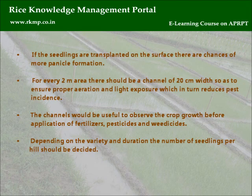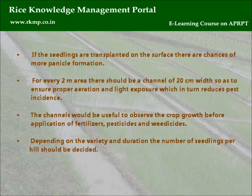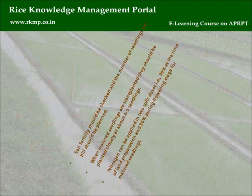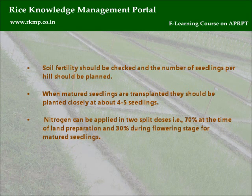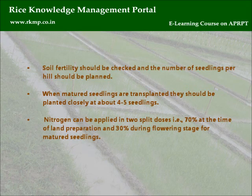For every 2 meter area, there should be a channel of 20 centimeters width to ensure proper aeration and light exposure, which in turn reduces pest incidence. The channels are useful for observing crop growth before application of fertilizers, pesticides, and weedicides. Depending on the variety and duration, the number of seedlings per hill should be decided based on soil fertility. When matured seedlings are transplanted, they should be planted closely at about 4 to 5 seedlings. Nitrogen can be applied in 2 split doses: 70% at land preparation and 30% during flowering stage.